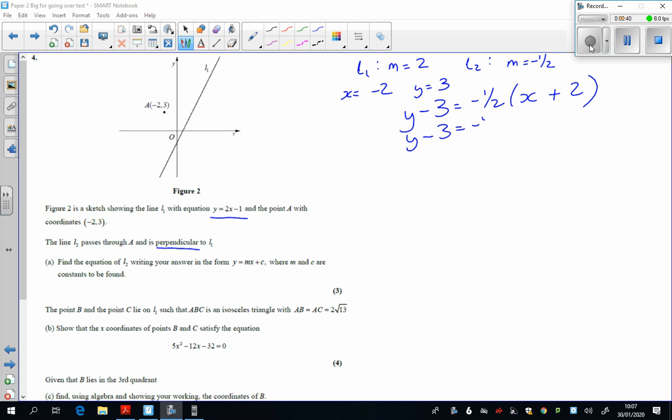And this time we will multiply it out and add the 3 to both sides. And so we've got three marks for doing a straight line equation.